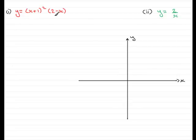So let's start with this one here: y equals x plus 1 all squared multiplied by 2 minus x. Now the first thing I notice about this is that we've got an x squared term here if we were to expand this bracket.